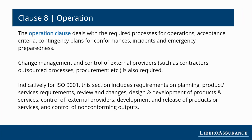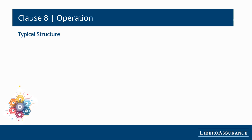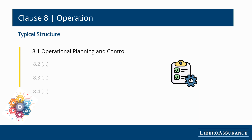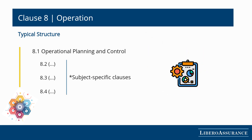The operation clause deals with the required processes for operations, acceptance criteria, contingency plans for non-conformances, incidents, and emergency preparedness. Change management and control of external providers such as contractors, outsourced processes, and procurement is also required. For instance, in ISO 9001, this section includes requirements on operational planning, product or service requirements, design and development, review and changes of requirements, control of external providers, production and release of products or services, and control of non-conforming outputs. Within the operation clause, the first sub-clause is concerned with operational planning and control; the remaining sub-clauses are subject-specific according to the requirements of each discipline.